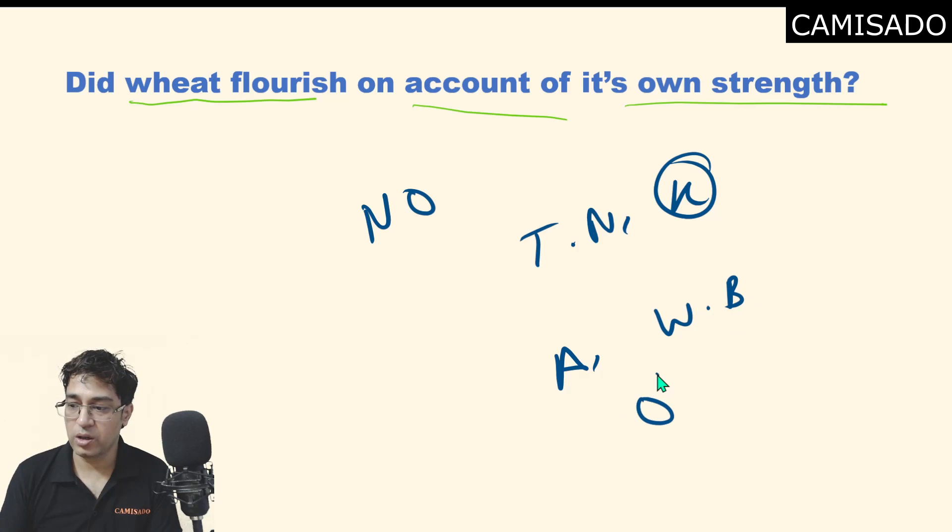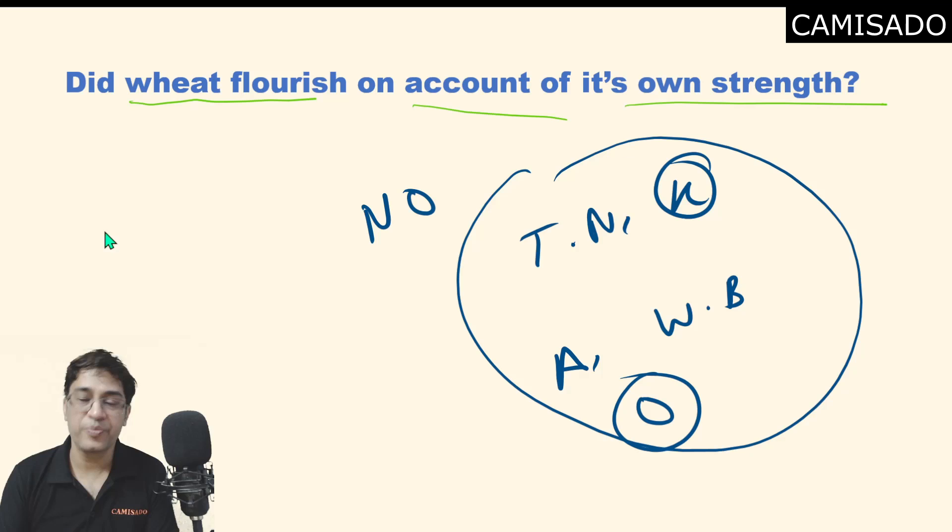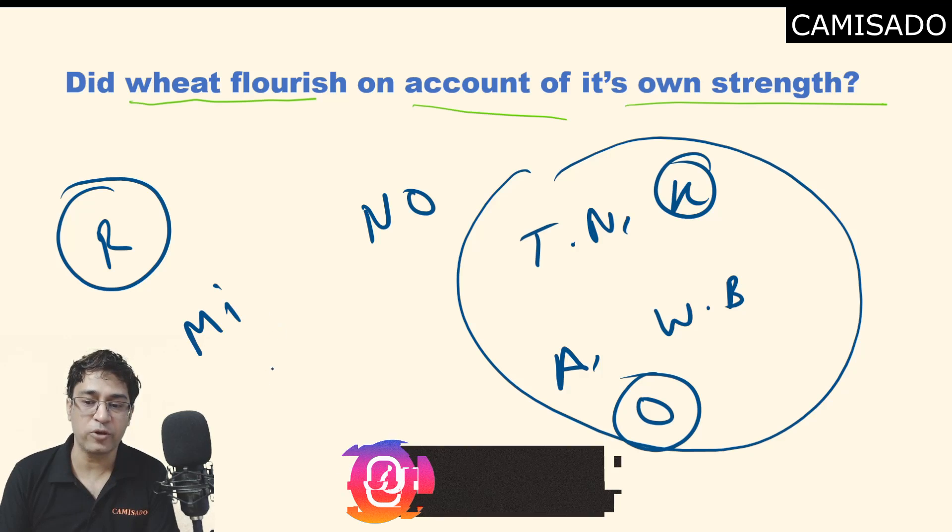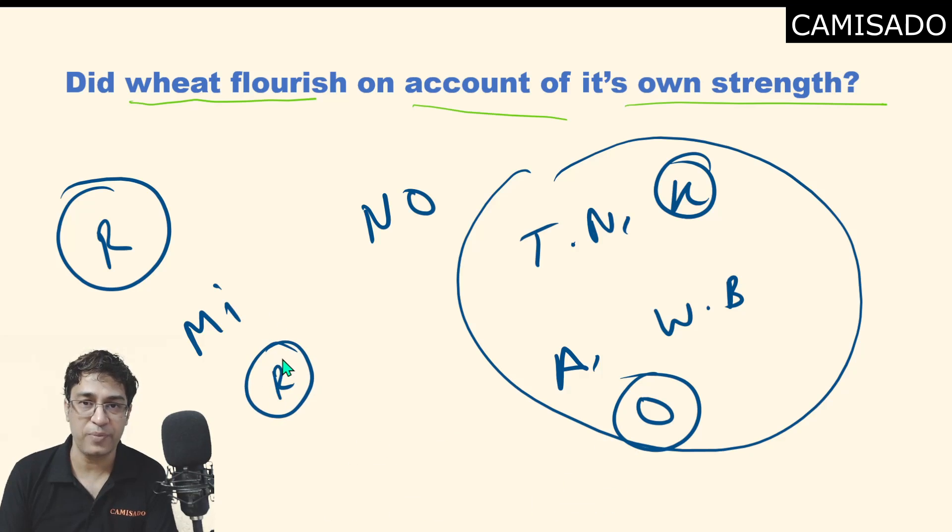West Bengal, Odisha, in these states rice is very popular. If you look at states like Rajasthan, earlier millets were very popular here. Millets include crops like jowar, bajra, ragi. Of course ragi was more popular in the southern part of the country, but millets like jowar and bajra were popular in Rajasthan.